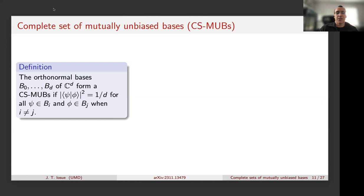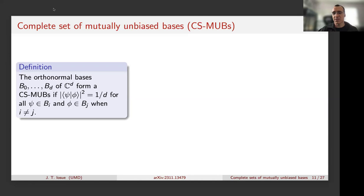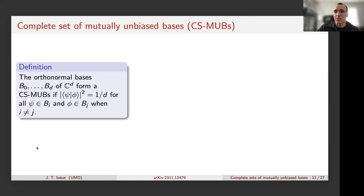A set of d+1 mutually unbiased bases means you have d+1 different bases to measure your quantum system in, and measuring in one basis tells you nothing about what you would have measured in any other basis. The maximum number of MUBs is d+1. You can equivalently rephrase this definition in terms of phases: expressing each basis B_1 through B_d in terms of B_0, the mutual unbiasedness condition forces each vector to be a uniform linear combination with different phases, so you can redefine a complete set of MUBs in terms of d³ phases satisfying two conditions.